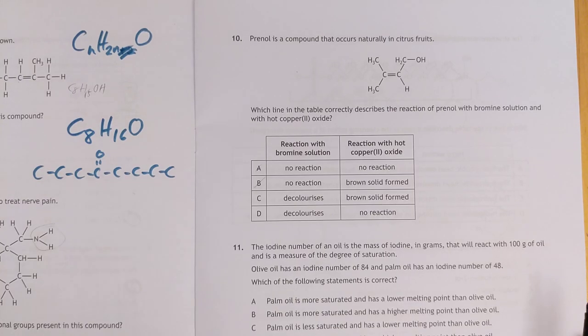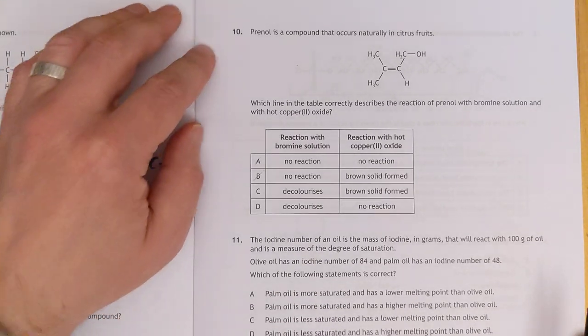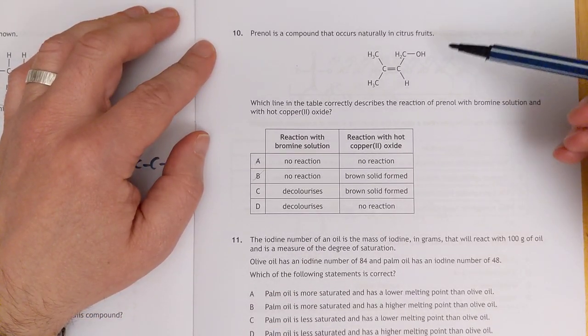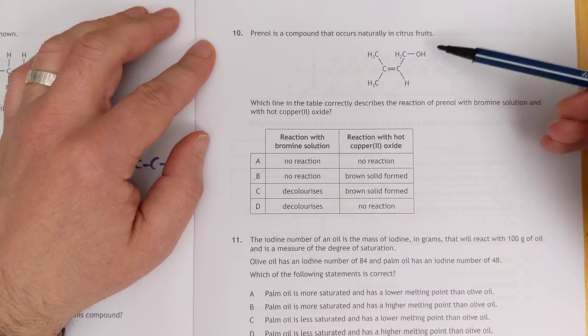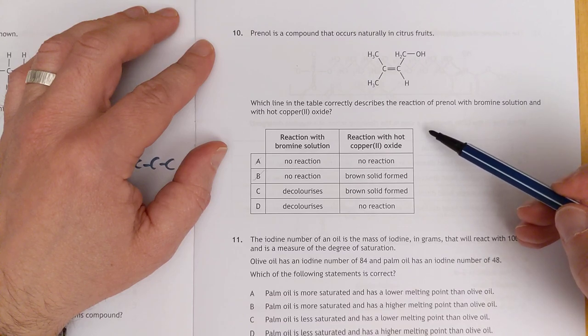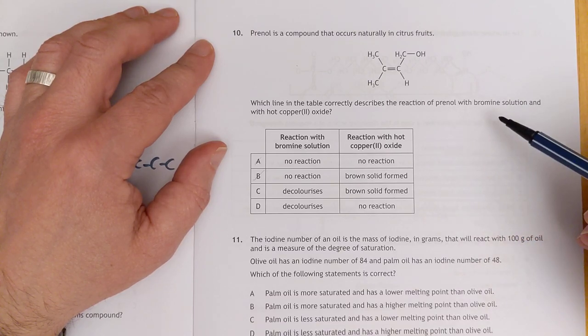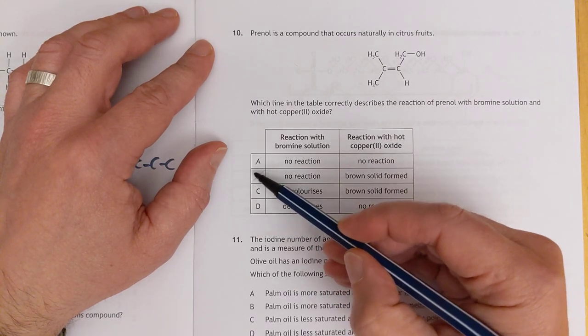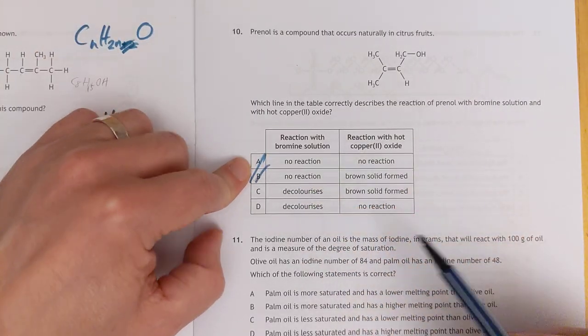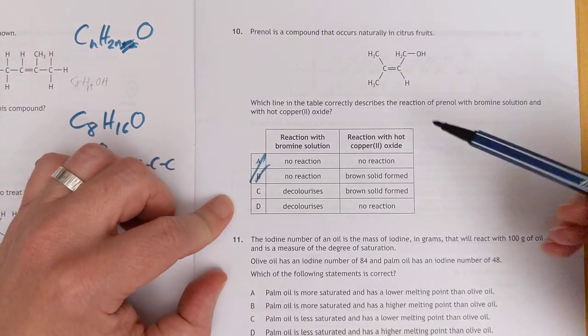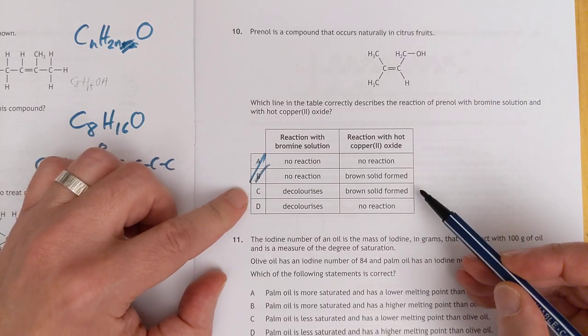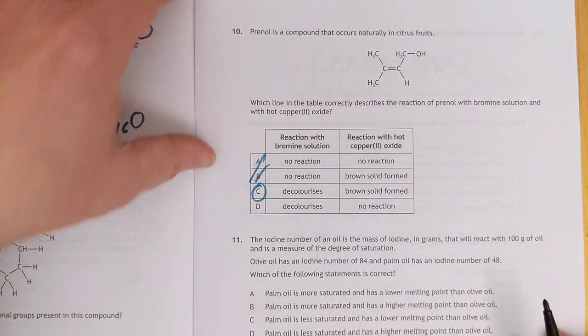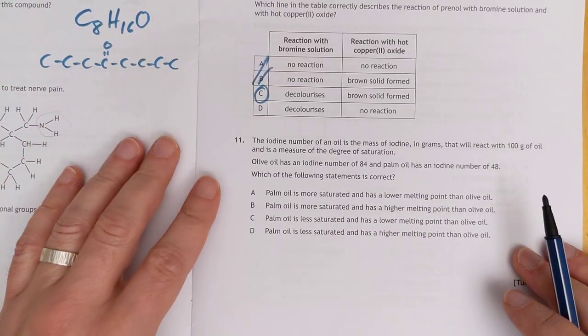Number ten. Prenol. Compound that occurs naturally in citrus fruits. Double bond and an OH. Which line on the table correctly describes the reaction of prenol with bromine solution? Well, it's going to decolorize bromine solution. So these are out. And copper 2 oxide is going to react with that and oxidize it. So therefore you're going to make copper, which is your brown solid.